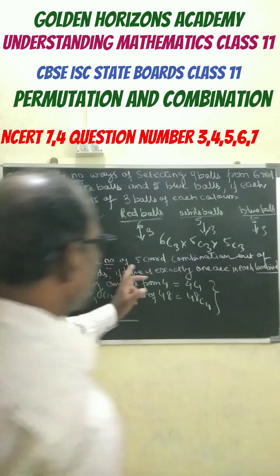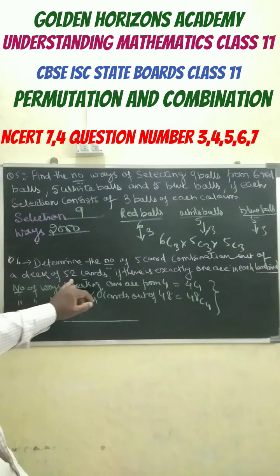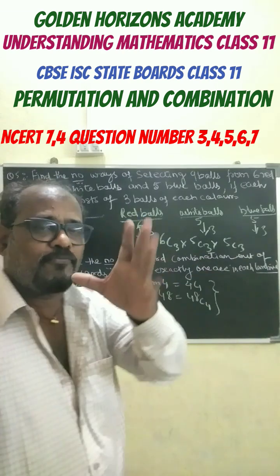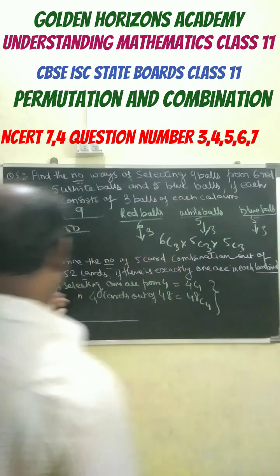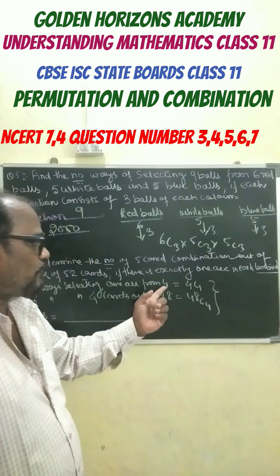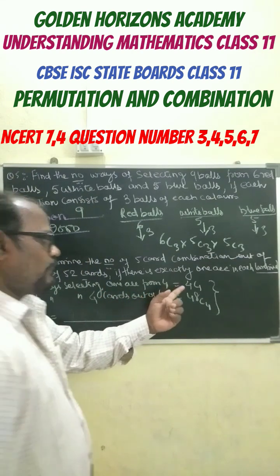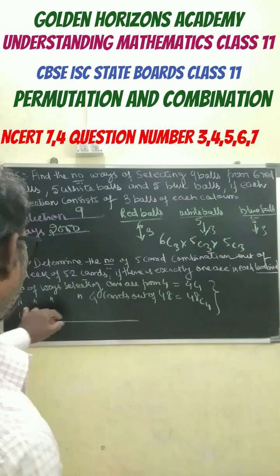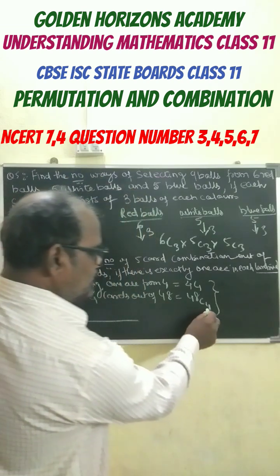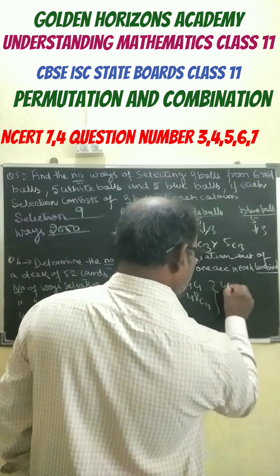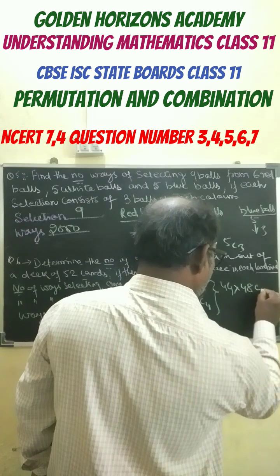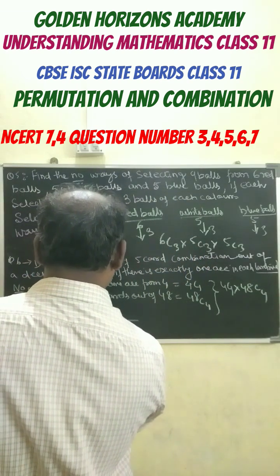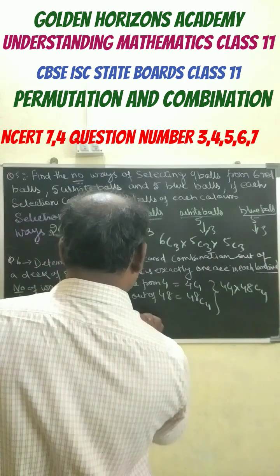Next question: determine the number of 5-card combinations out of a deck of 52 cards if there is exactly 1 ace. The number of aces is 4 in the deck. Selecting 1 ace out of 4 is 4C1, and when 4 cards are taken out, the remaining cards are 48. So the rest 4 cards out of 48 is 48C4. This should be 4C1 times 48C4. If you multiply, the answer would be 778,320 ways.